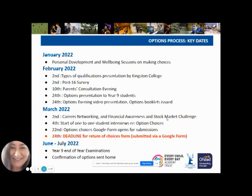On the 10th, you had the parents' consultation evening, and hopefully there was the opportunity to have a brief discussion with some of the teachers about your child's suitability for taking a subject further into GCSE. And today, the 24th, is the options presentation, which for the second year in a row we are having to do online to parents, but we're very pleased to have seen the year 9s live in assembly at the end of the day, during which I explained the option process to them.